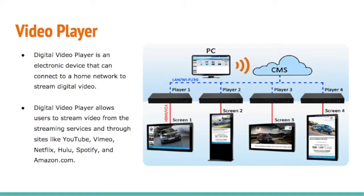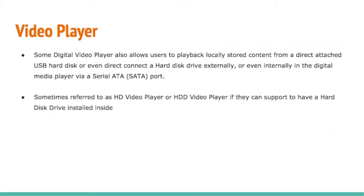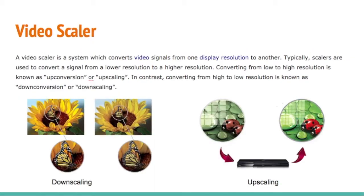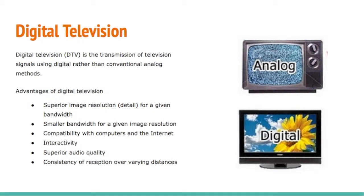Now for the applications of video processing. First is the video player — a digital video player is an electronic device that can connect to a network to stream digital video. It can also play back locally stored content from a directly attached USB hard disk or externally connected hard disk drive. Video scaler is a system which converts a video signal from one display resolution to another.